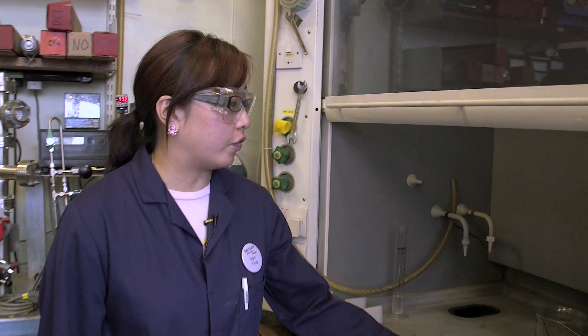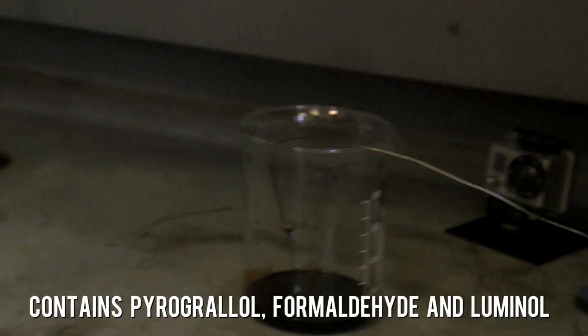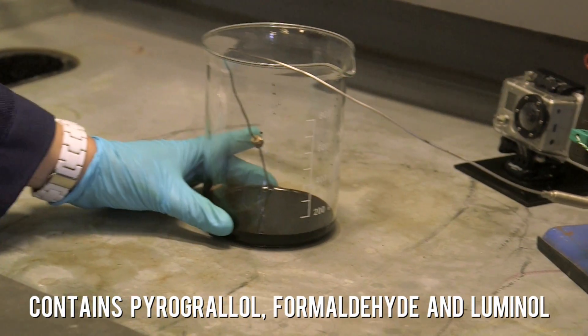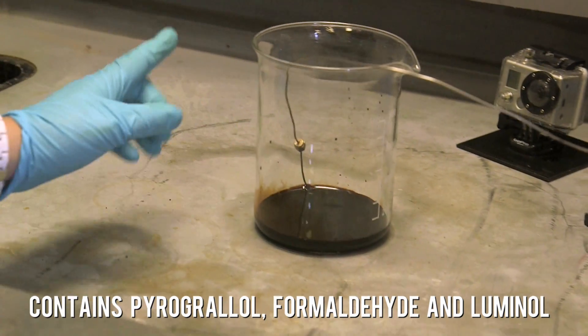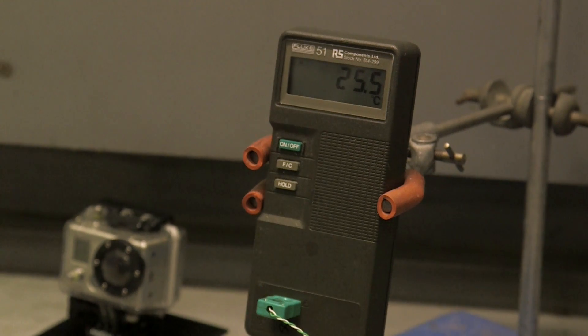So inside the fume hood we've got a liter beaker and there's a dark solution in there. I'll put the light on temporarily just so you can see kind of a reddish-brown color there. And we've got inside a thermocouple reading about 25.5 degrees Celsius.